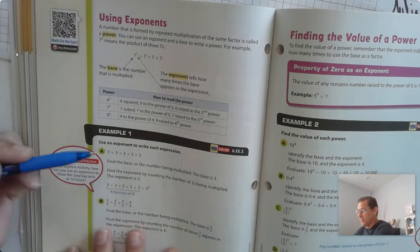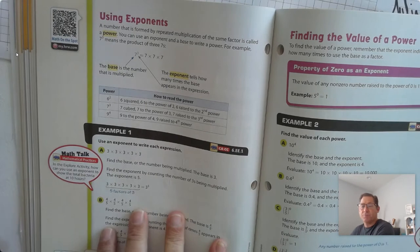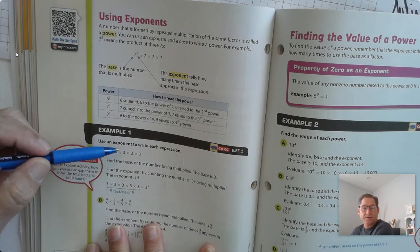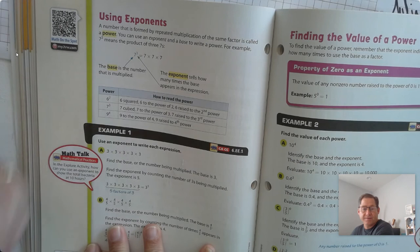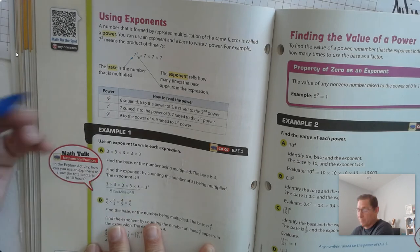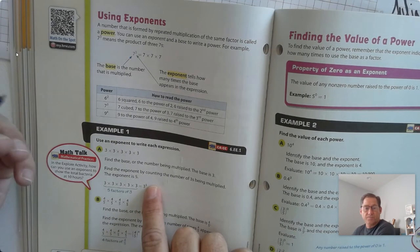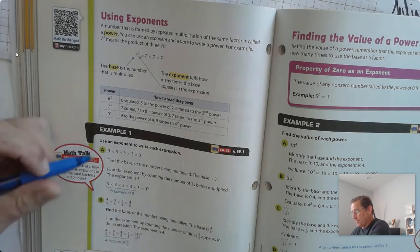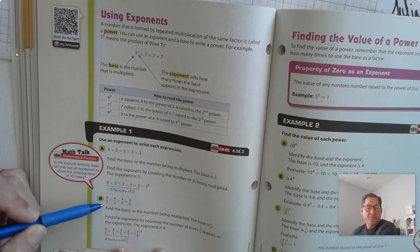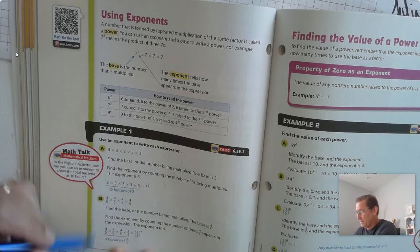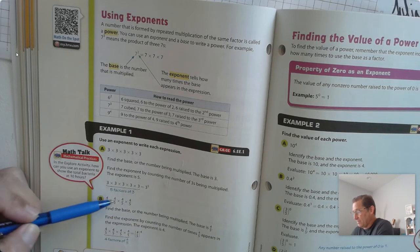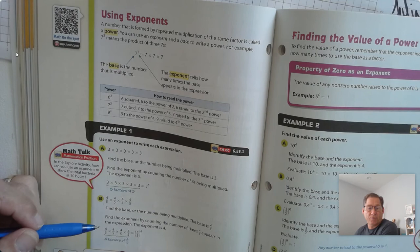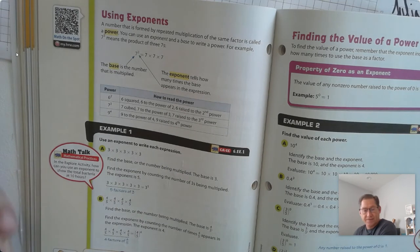Use an exponent to write each expression. Find the base — the number that's repeatedly being multiplied. In this case the base is 3, and it's being multiplied 5 times, so we'd say 3 to the fifth power. We can also do it with fractions: 4 fifths times 4 fifths times 4 fifths times 4 fifths — the base is 4 fifths, it's being repeatedly multiplied 4 times, so we put 4 fifths in parentheses and raise it to the fourth power.